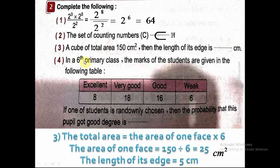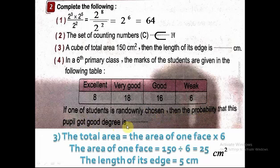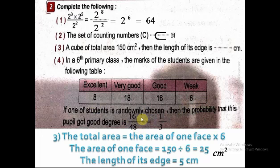Number 4: in a sixth primary class, the marks of students are: Excellent 8, Very Good 18, Good 16, Weak 6. If one student is randomly chosen, the probability that this pupil got a 'Good' degree — 16 students got Good, out of a total of 8 + 18 + 16 + 6 = 48. So it's 16 out of 48. Simplifying by dividing up and down by 16 gives one third.